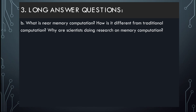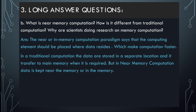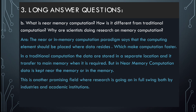Why are scientists doing research on near-memory computation? In the traditional way of computing, data is stored on the hard disk, but the CPU performs calculations using data from the main memory or RAM. This data must be copied from the hard disk to RAM, which takes time and slows processing. If we keep the information in main memory only, processing speed will be faster — this is the concept of near-memory computation.